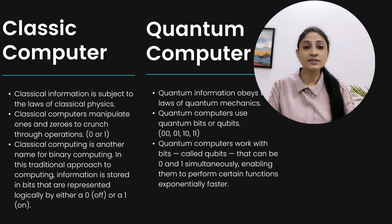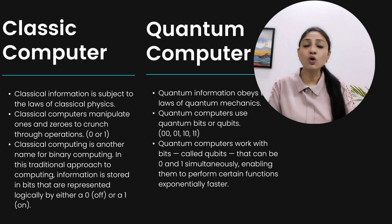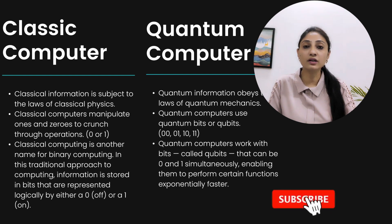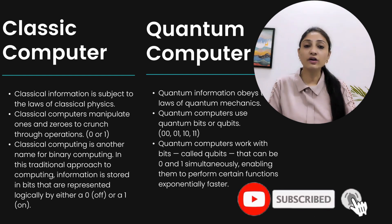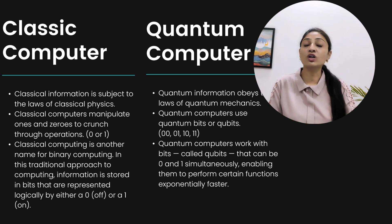The main differences between classical and quantum computers: classical information is subject to the laws of classical physics — concepts like PNP, NPN semiconductors that we learn in 10+1 and 10+2 are used to build classical computers. However, in quantum computers, quantum information obeys the laws of quantum mechanics, which those with a BSc or MSc in physics would know better.